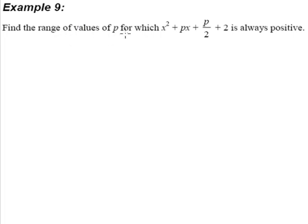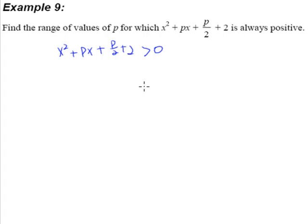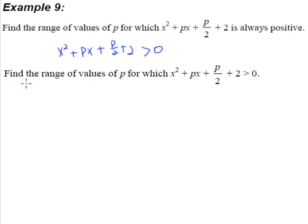Find the range of values for p for which this quadratic expression is always positive. What does it mean to have this quadratic expression always positive? Well, it simply means that this quadratic expression, p over 2 plus 2, is greater than 0. This same question can be rephrased as: find the range of values of p for which this quadratic equation is greater than 0. They mean the same thing. Be very clear whenever you read the question and make sure you understand what the question is talking about.